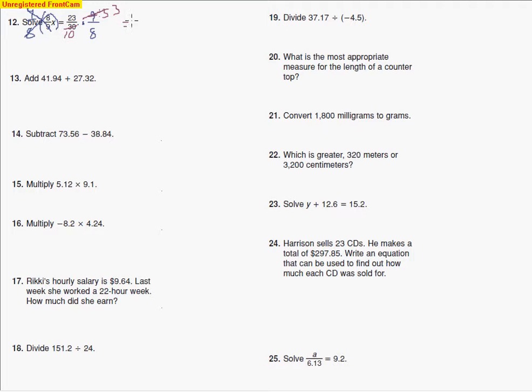So I can go ahead and multiply across now. I'm multiplying 3 times 23, so let me rewrite that, 23 times by the 3, and then I'm multiplying the 10 by the 8. That leaves me with a total of 69 over 80.